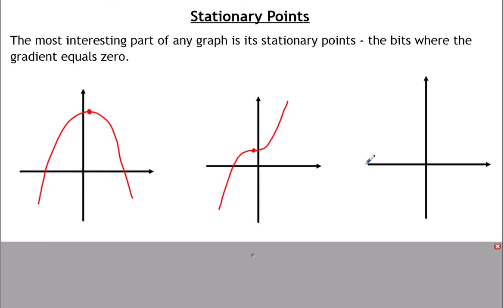You can also have graphs where they go up and down all over the place. This graph has got one, two, three, four stationary points on it. It depends on the function or the equation itself. Usually it depends on the greatest power — the higher the power, generally the more stationary points you have.